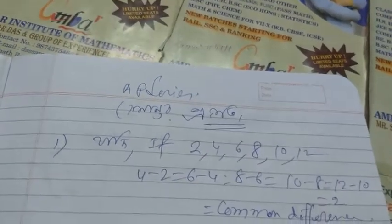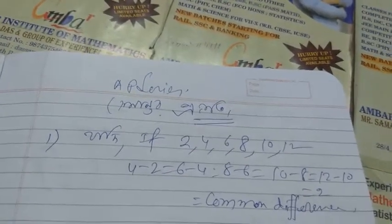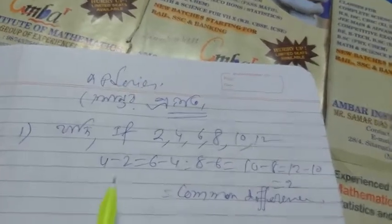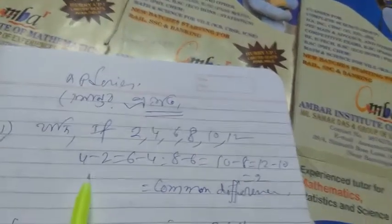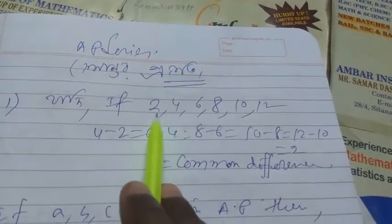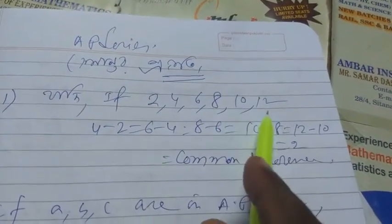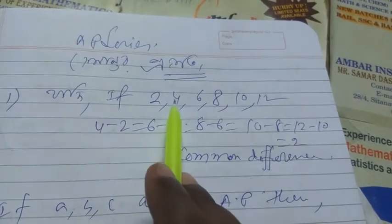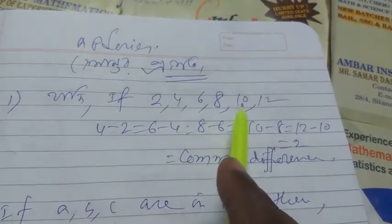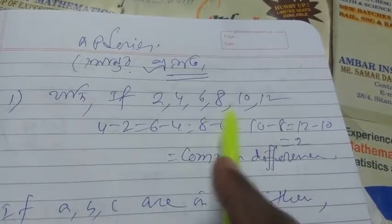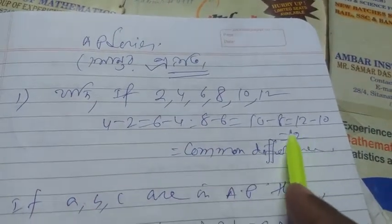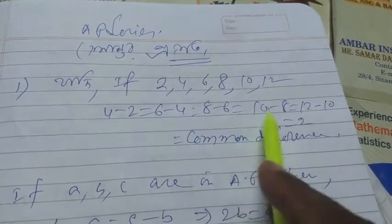I want to tell the definition of AP. If a sequence has a common difference — the same difference — that's why it's called a common difference. For example, 2, 4, 6, 8, 10, and 12: we see 4 minus 2, 6 minus 4, 8 minus 6, 10 minus 8, 12 minus 10 — all differences are the same. That's why it's called common. Therefore this sequence is an AP series.